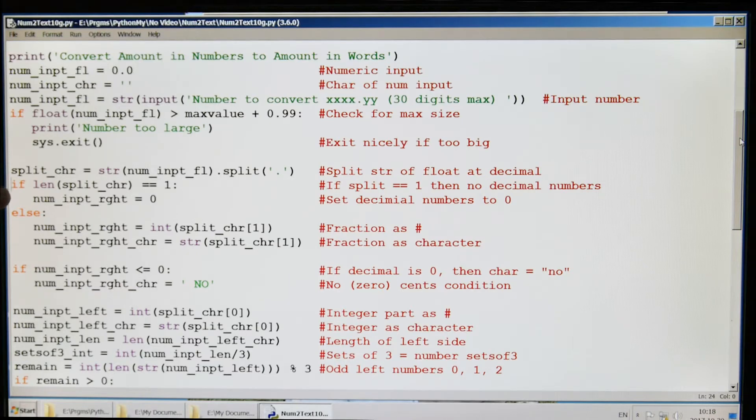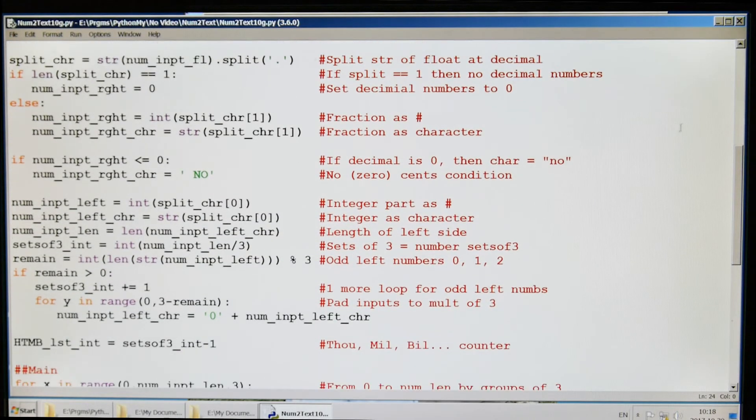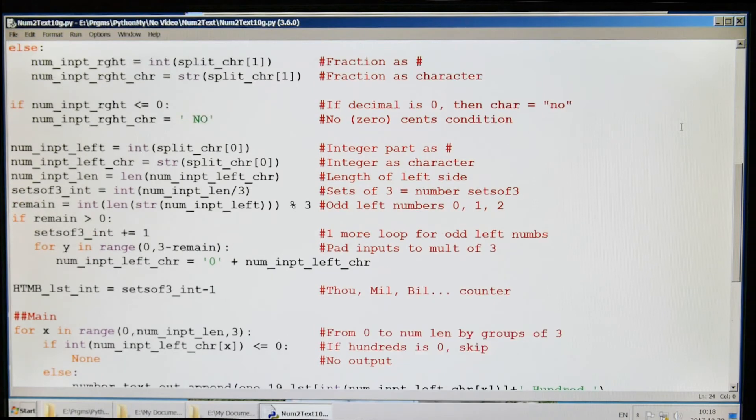Down here we're going to look at a fraction as a number and then fraction as a character. Go down some more—here we're looking at the fractional part of it, so if it's like 30 cents or something, point three zero, this is the code to handle that part.